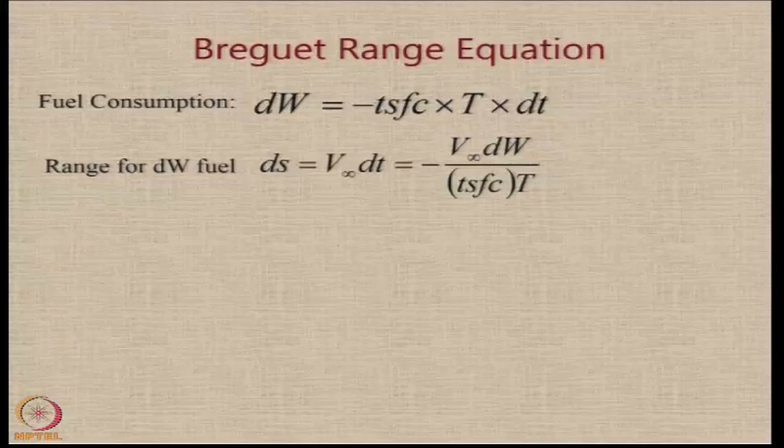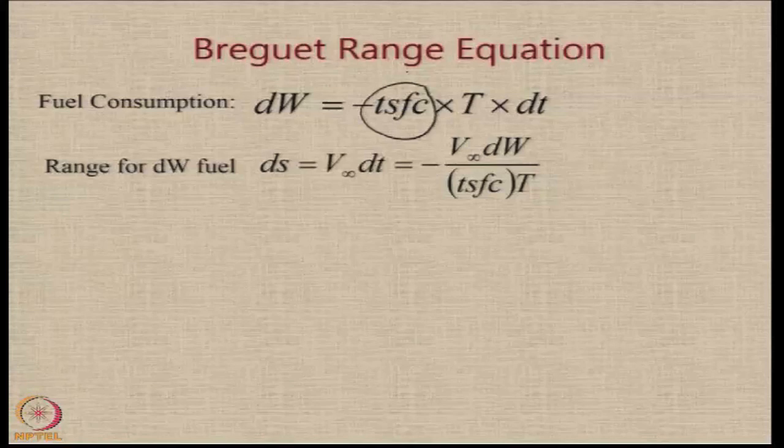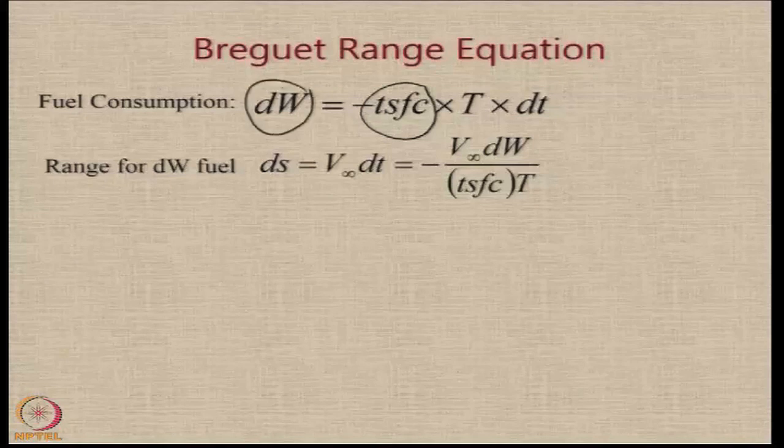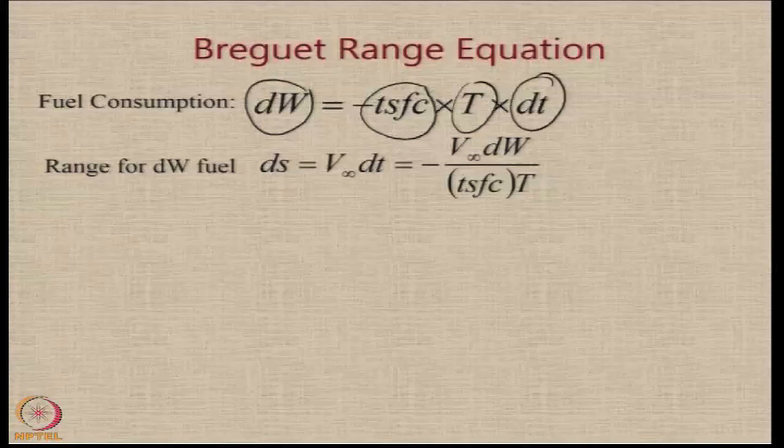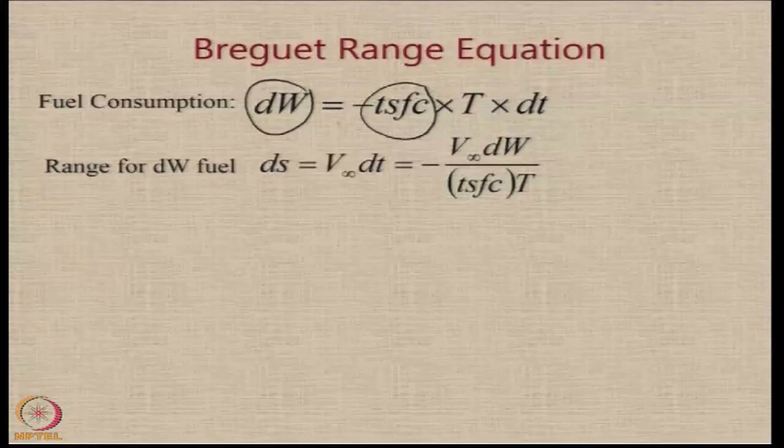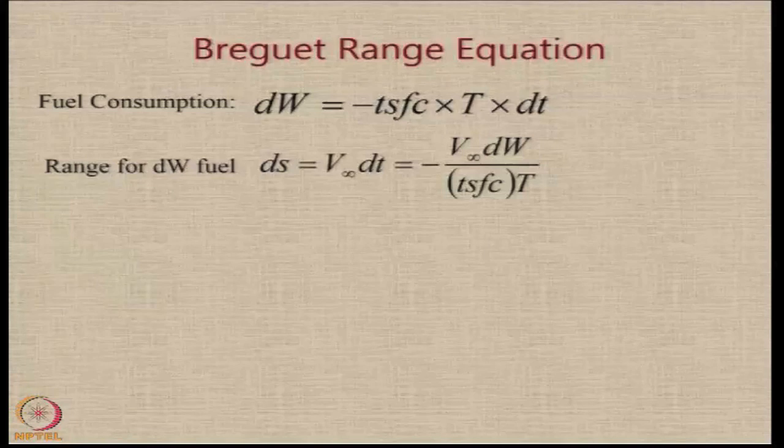So, if the fuel consumption basically by definition of TSFC, now TSFC of the thrust specific fuel consumption is defined actually as how much fuel is consumed per unit thrust per unit time and this negative sign indicates that there is a reduction in the fuel with time. So, from there you can get a quick idea that DW or the change in the weight of the aircraft which is assumed to be only because of fuel consumption is basically going to be TSFC into T into DT.